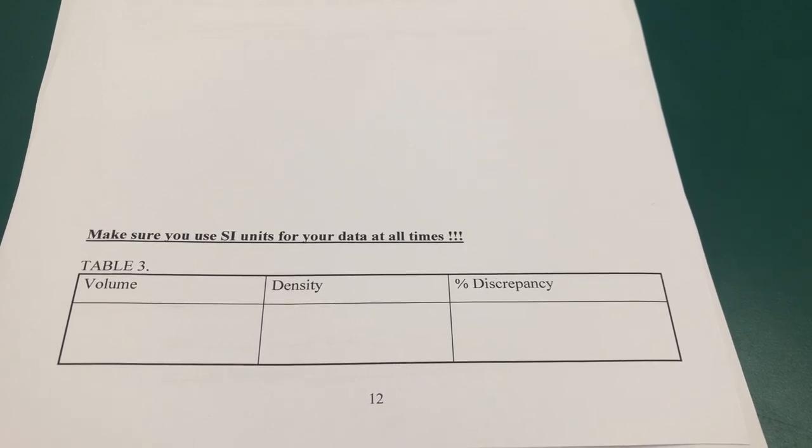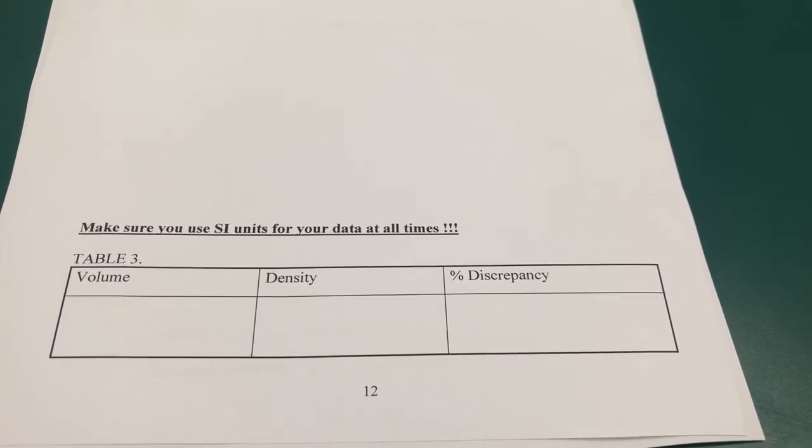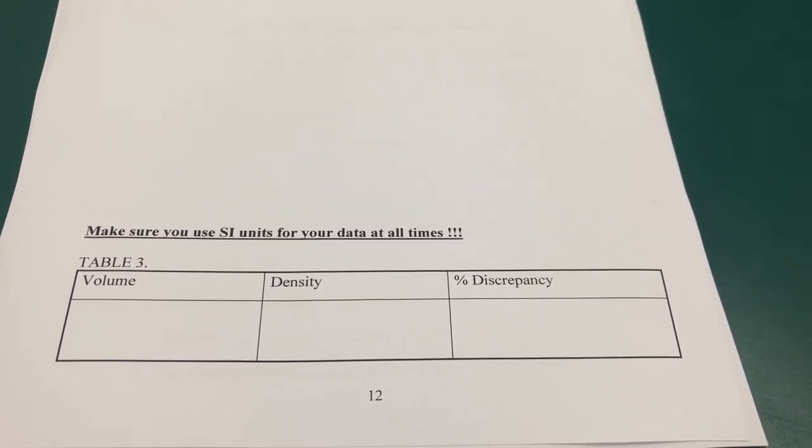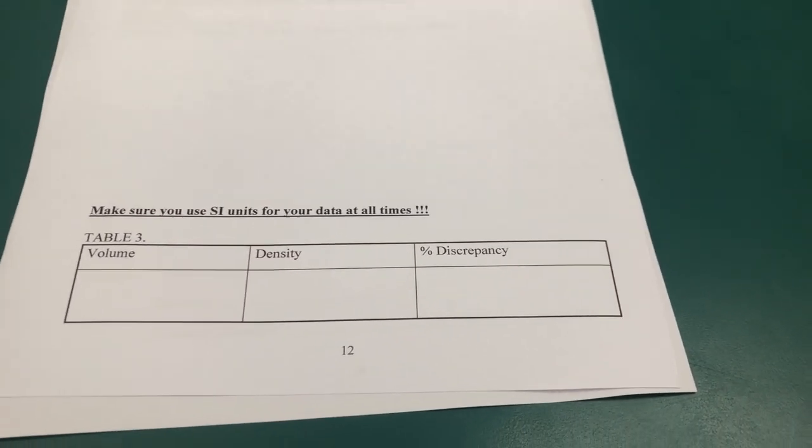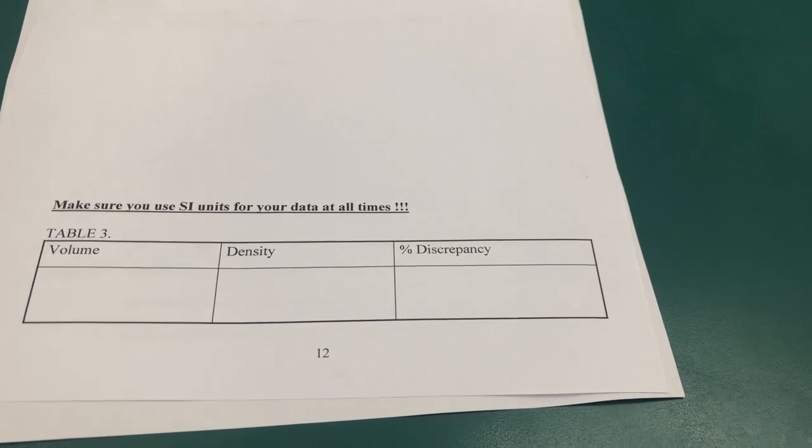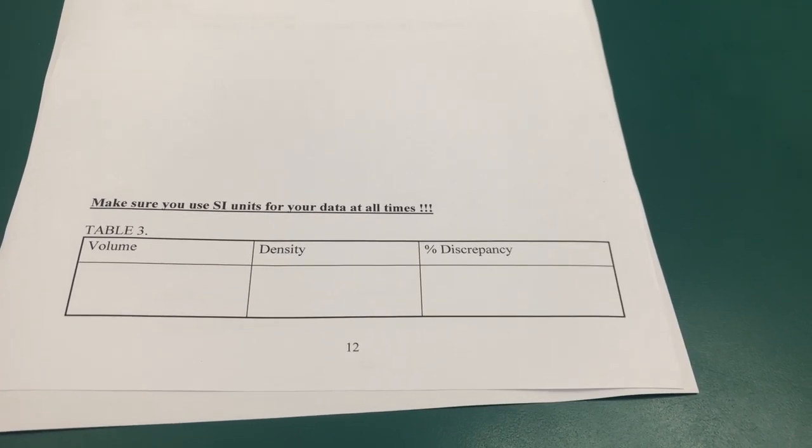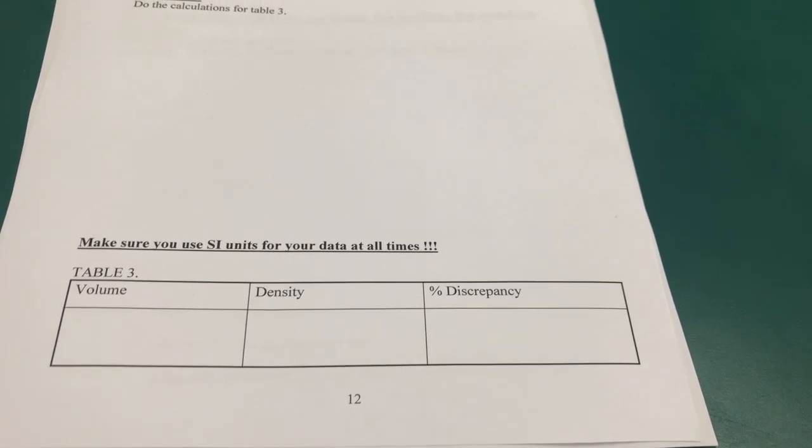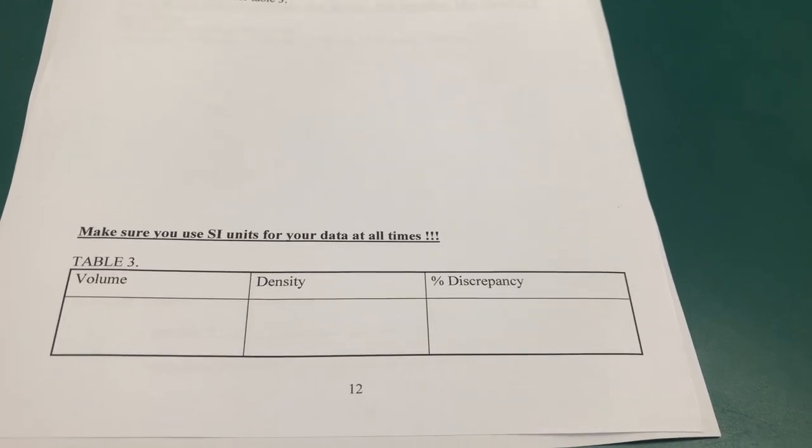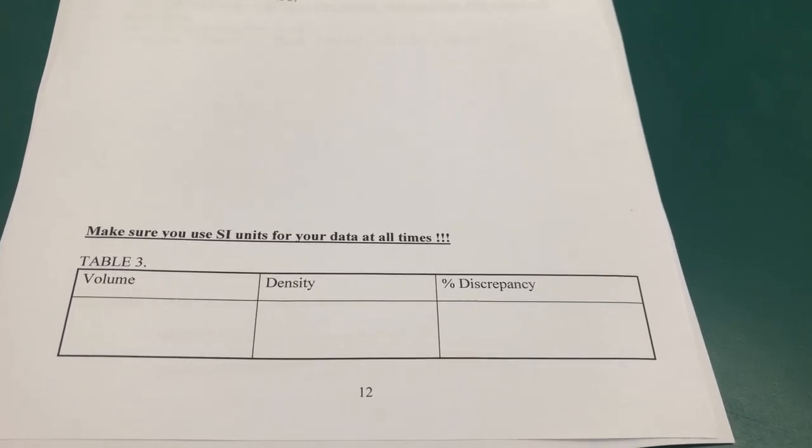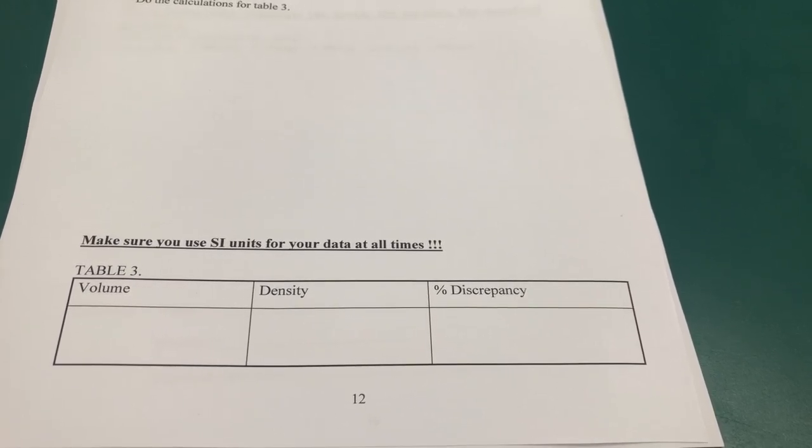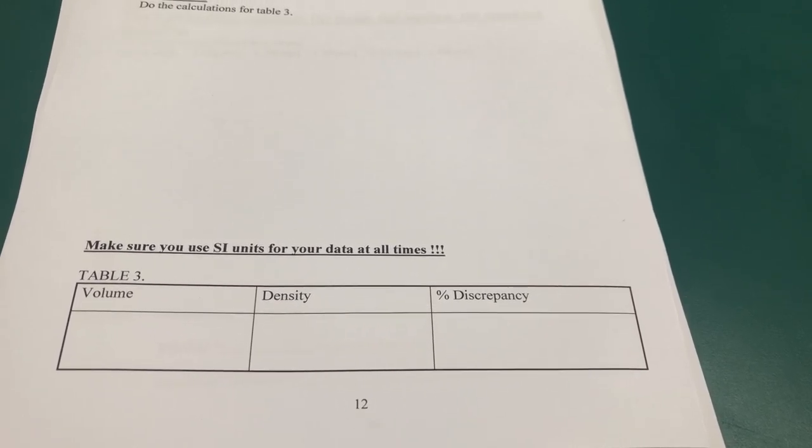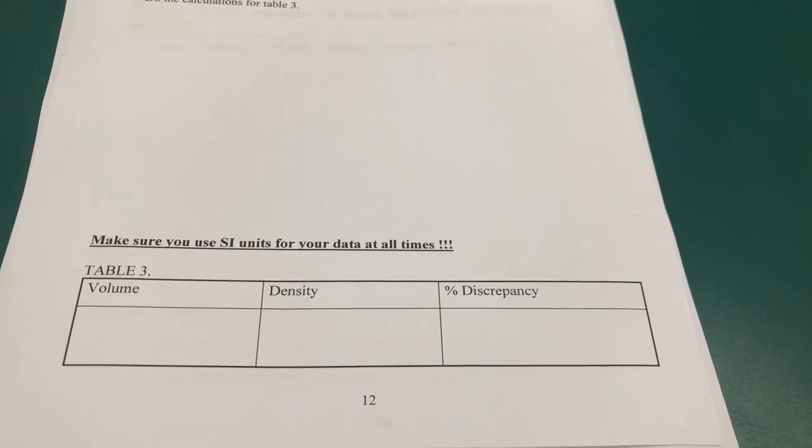Then for density, you calculate the ratio between mass and volume. Compare it to the accepted truth value for aluminum. You can find the density of aluminum in the manual or Google it. Find the percent discrepancy between your value and the accepted truth value.